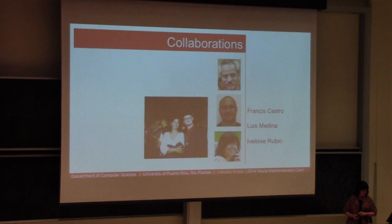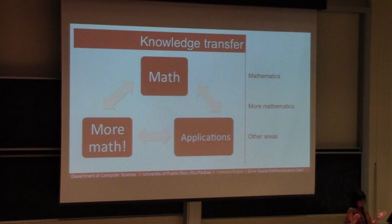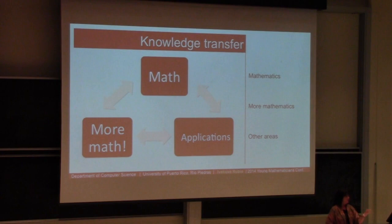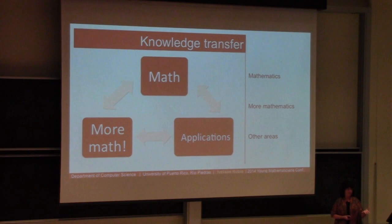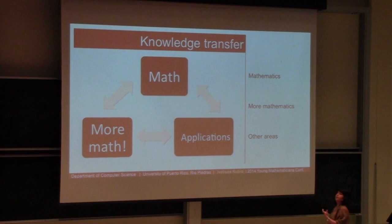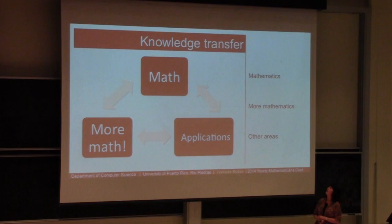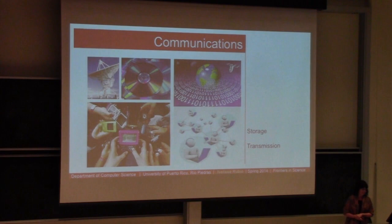This research is connected to applications. It started as research in math, maybe with some applications to solvability of systems of polynomial equations, and when we were happy with the results, Francis came with a paper and said he thought we could apply our results to cryptography. We started looking at that and were very happy to see that we could improve some results and answer questions posed in the applications. We were also able to improve our results by getting insight from the application — a nice way to see how knowledge is transferred back and forth.